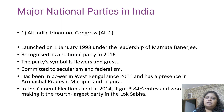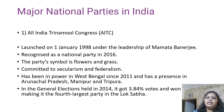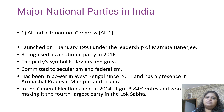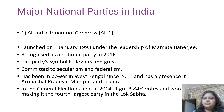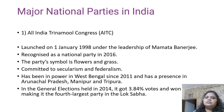Major national parties in India — the All India Trinamul Congress, AITC, was launched on 1st January 1998 under the leadership of Mamata Banerjee and recognized as a national party in 2006. The party symbol is flowers and grass; it is committed to secularism and federalism. It has been in power in West Bengal since 2011 and also has presence in Arunachal Pradesh, Manipur, and Tripura. In the general election held in 2014, it got 3.84% votes and won 34 seats, making it the fourth largest party in the Lok Sabha.